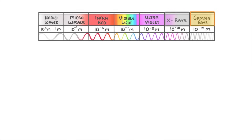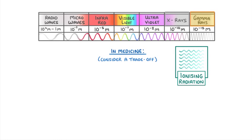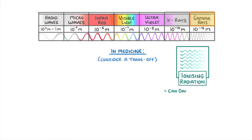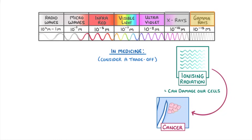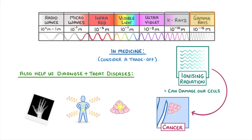Whenever we use X-rays and gamma rays in medicine, we always have to consider a trade-off. Both of them are types of ionising radiation, which can damage our cells, and in rare cases lead to cancer. However, they also help us to diagnose and treat diseases, so it's often worth the risk. It just means that we have to weigh up the pros and cons for each individual case.